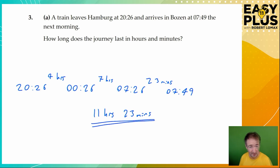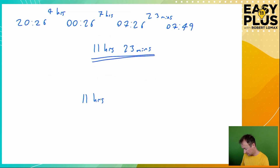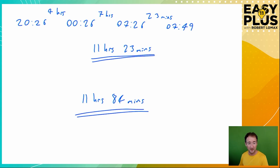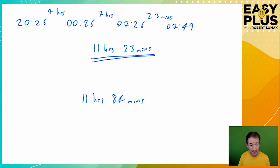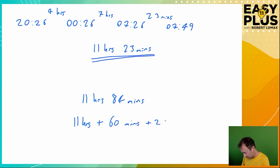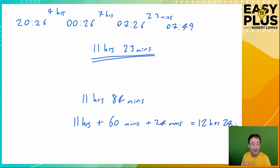Now because this question isn't especially complicated, let's imagine your answer had been something like 11 hours and 84 minutes. You might be tempted to just go: great, I found the answer — underline, move on. But 11 hours and 84 minutes is a little bit strange, because there are only 60 minutes in an hour. So if you had something like this, you should think of it as 11 hours and 60 minutes and 24 minutes, which would give 12 hours and 24 minutes. But that isn't the answer to this question — it's just a side example.